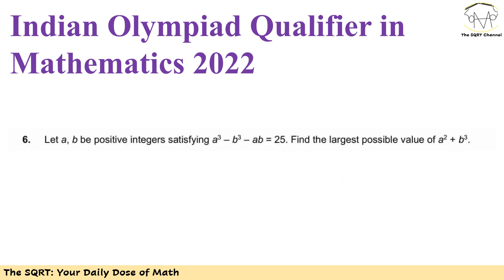For the sake of completeness let's review the original problem first. This is problem 6 of this Indian Olympiad qualifier in mathematics from 2022. The problem asks: let a and b are positive integers satisfying a³ minus b³ minus ab equals 25 and we want to find the largest possible value of a² plus b³.